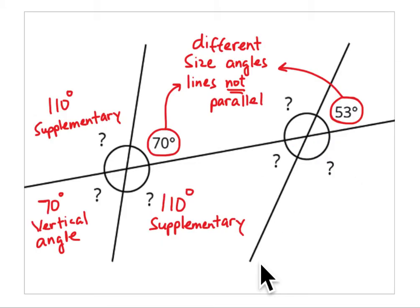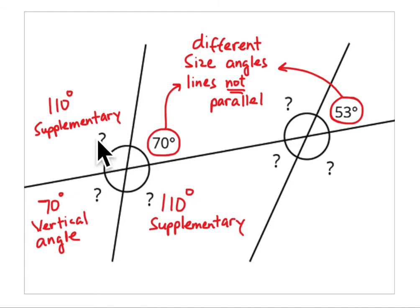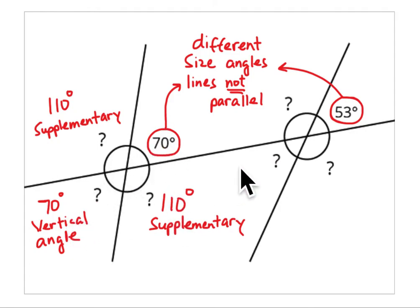Problem three gives two lines that are not parallel. Since they're not parallel, the angles are going to be different sizes, so you have to figure out the remaining three angles independently. You can't say the four angles at one intersection are the same as at the other, because they're not — they're different because the lines aren't parallel. Using supplementary angles: 70 plus what equals 180? That's 110 degrees.